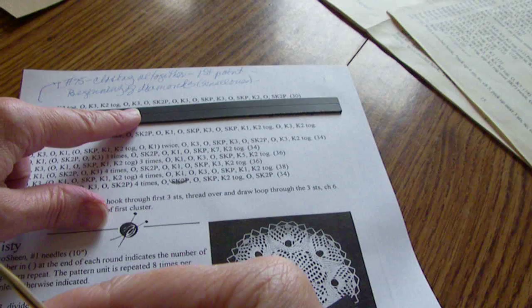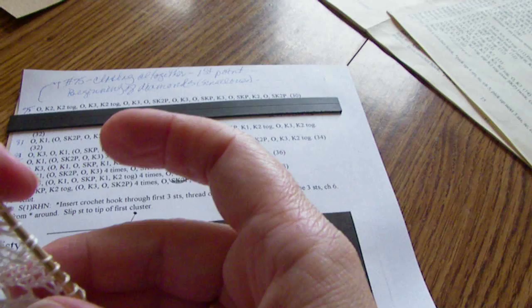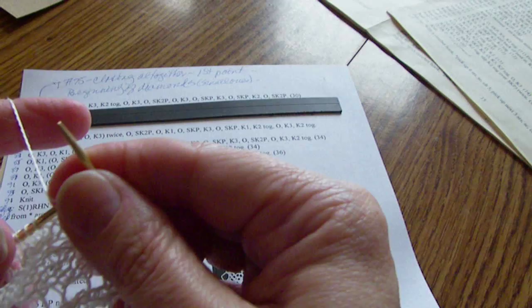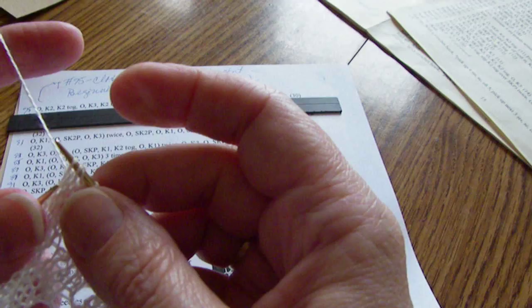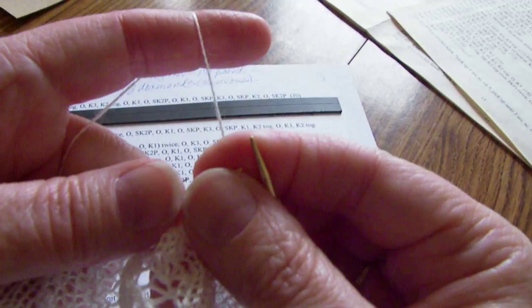So I have done a yarn over knit three and now I do yarn over. I slip and knit two together, trying to look at the camera. I do a yarn over and knit three.